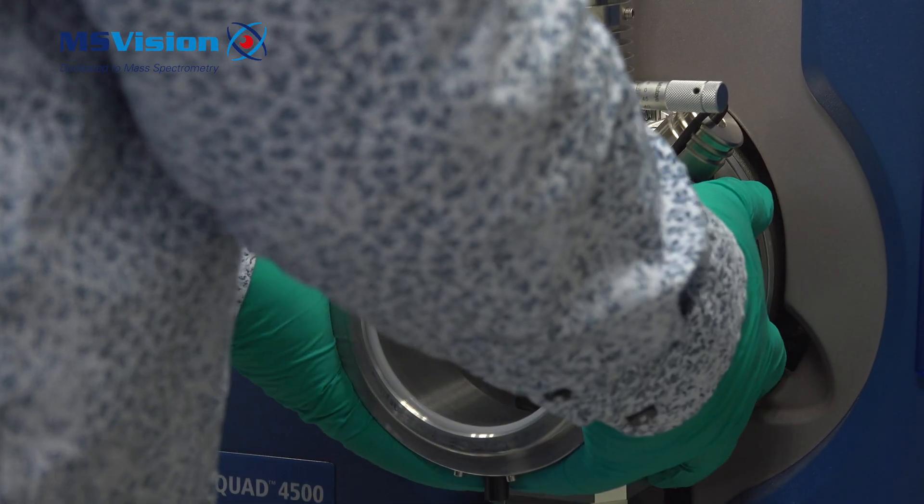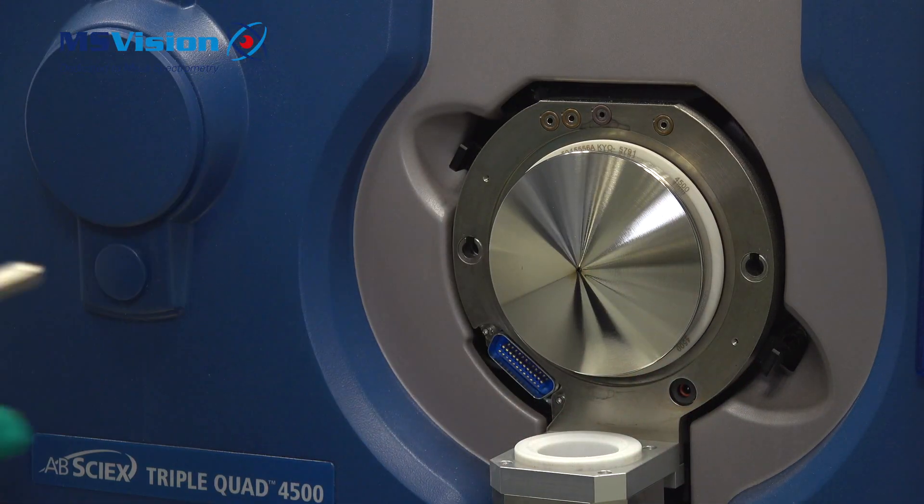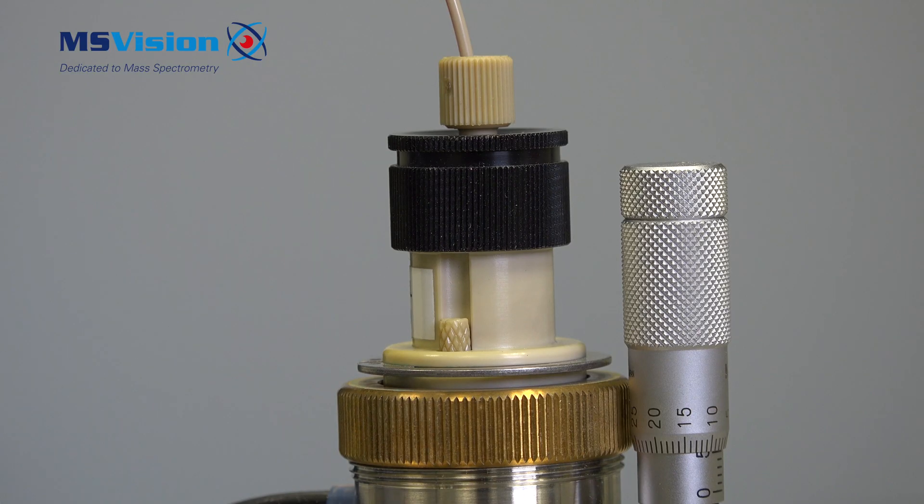To change the capillary, first remove the source by moving the two black levers down and pulling the source out and away from the system.